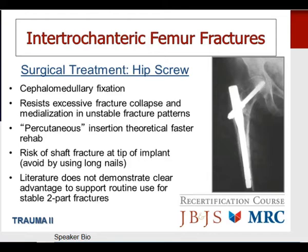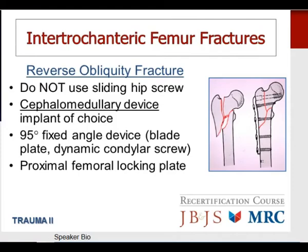The reverse obliquity fracture is a special intertrochanteric fracture deserving mention. With this pattern, a sliding hip compression screw and side plate is contraindicated. A cephalomedullary device is the implant of choice. Alternatively, a 95-degree fixed-angle device such as a blade plate or dynamic condylar screw can be used, as well as a proximal femoral locking plate.